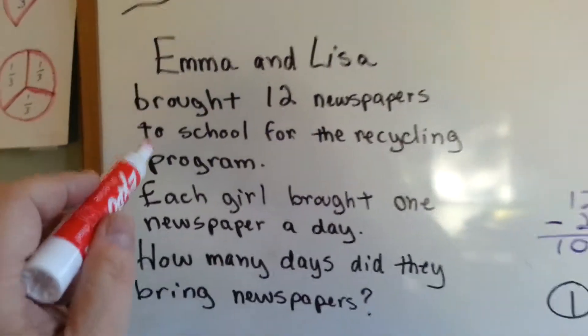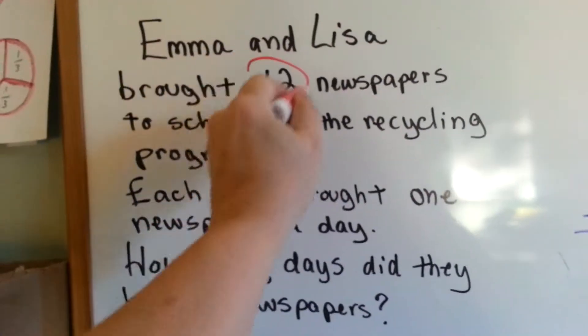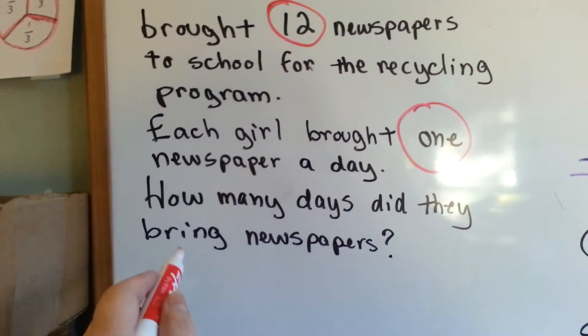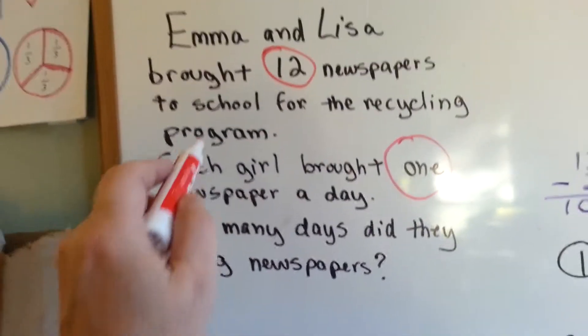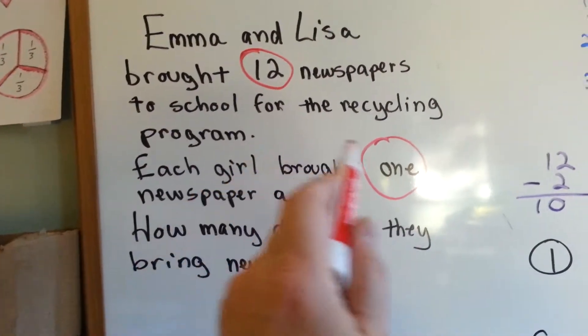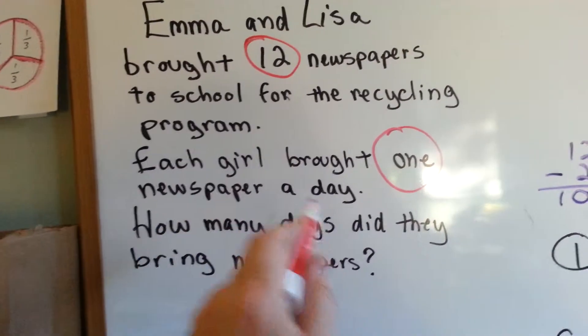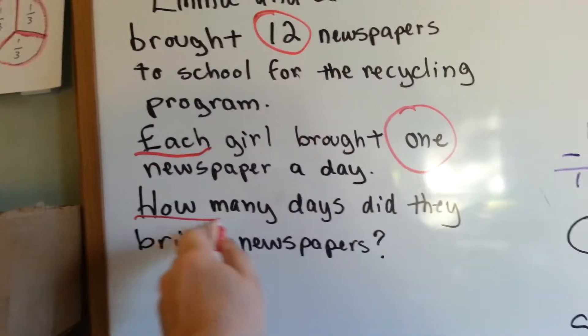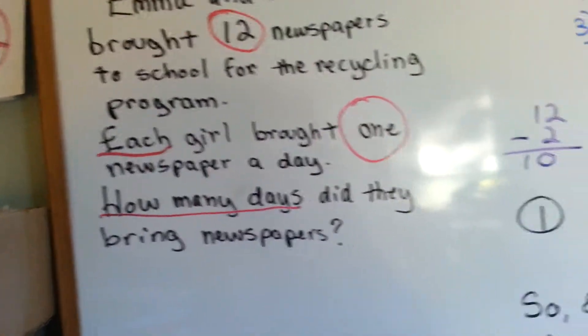So when you have a word problem, first we're going to circle the important things, okay? There were 12 newspapers, they brought one newspaper a day each, and we're looking for how many days, okay?